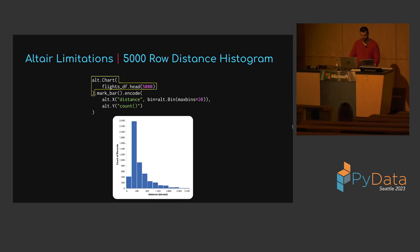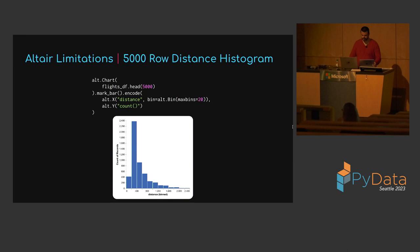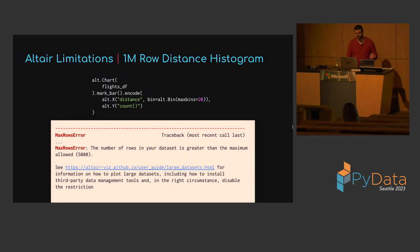Let's create a histogram of flight distances. We'll wrap the first 5,000 rows in an Altair chart, create a bar mark, encode the distance column as x binned into approximately 20 bins, and use the count of entries per bin as the y encoding. But when we pass all 1 million rows, this results in an Altair max rows error. Altair performs data transformations like histogram binning in the browser, and to avoid crashing the browser with too much data, it imposes a 5,000 row limit by default.